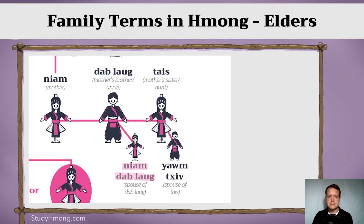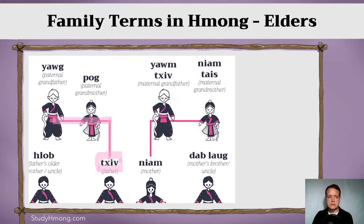Your mother's sister — your maternal aunt — you call Thai Thai, and her husband you would call Yotzi. So your maternal aunt is Thai Thai and her husband is Yotzi.